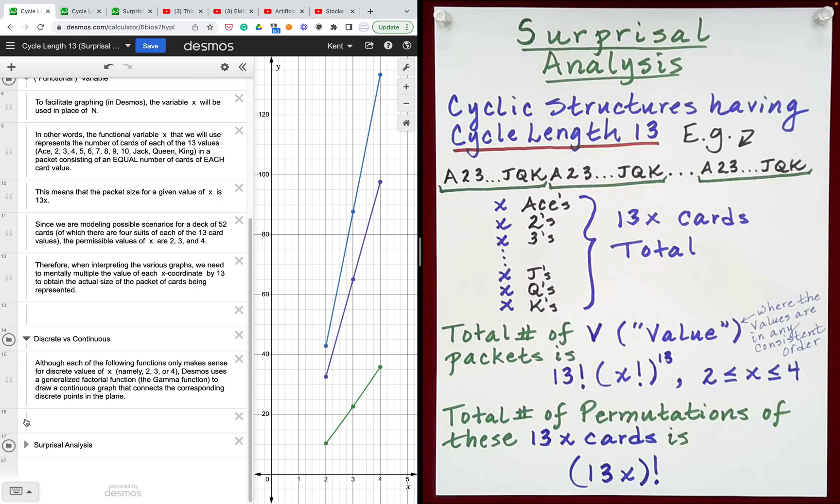Although each of the following functions only makes sense for discrete values of x, namely 2, 3, and 4, Desmos uses a generalized factorial function, the gamma function, to draw a continuous graph that connects the corresponding discrete points in the plane.